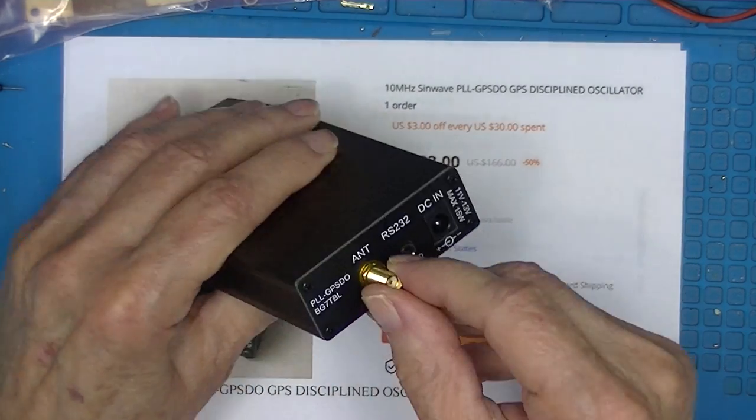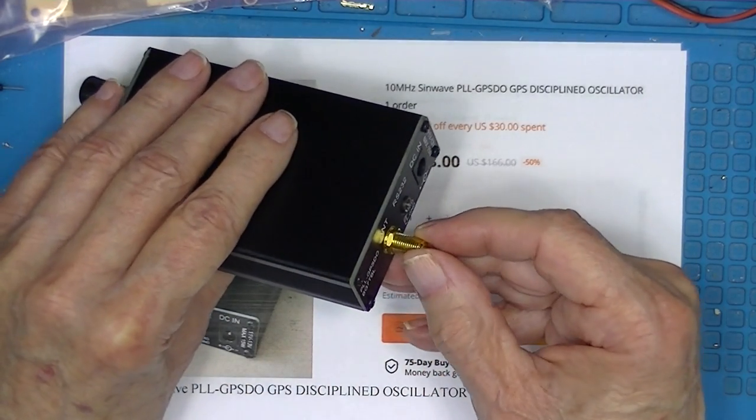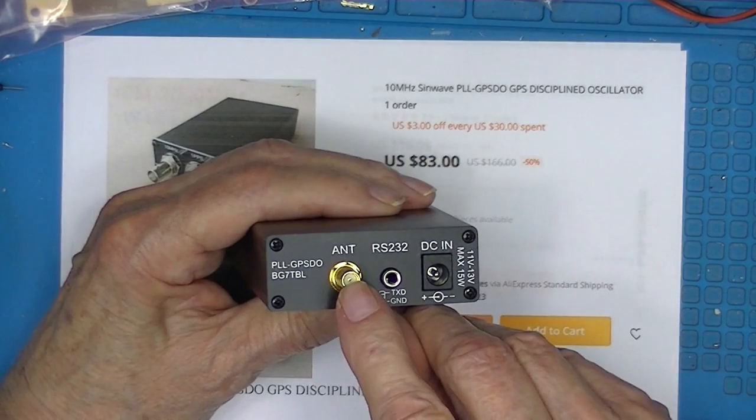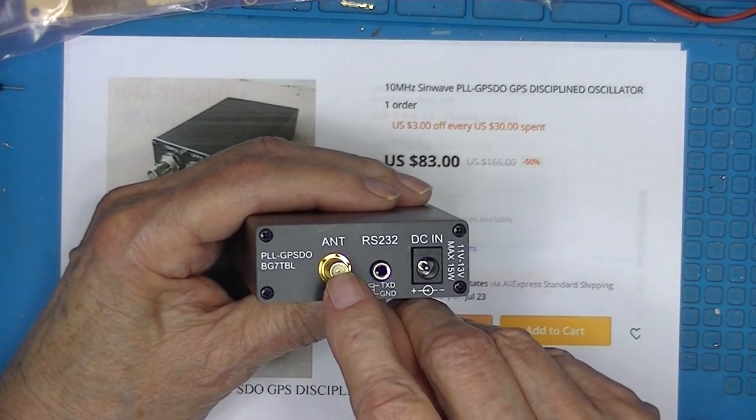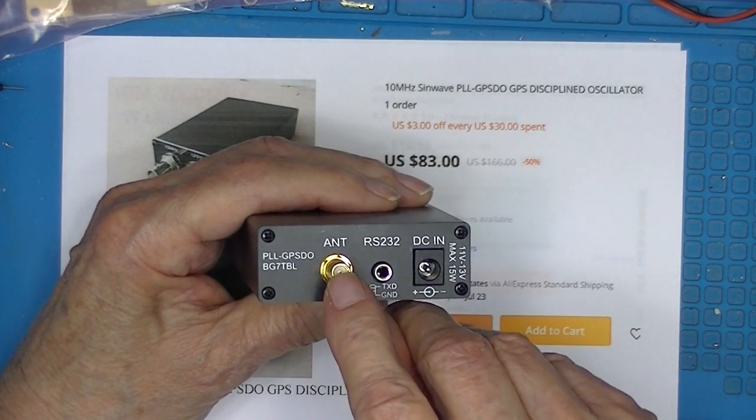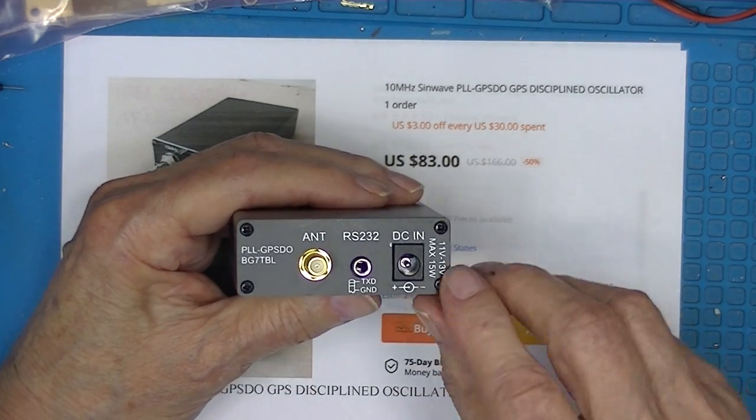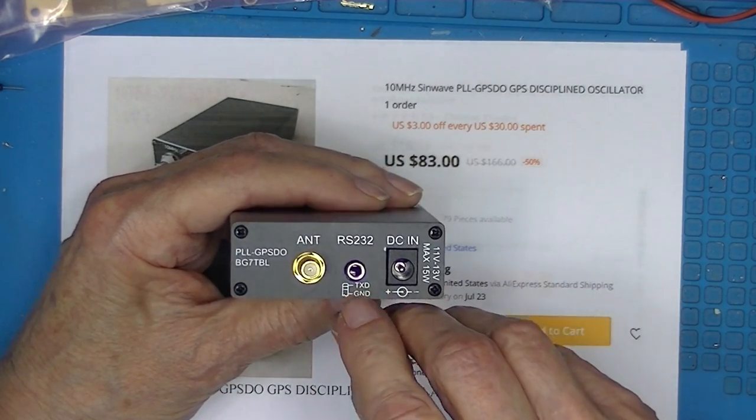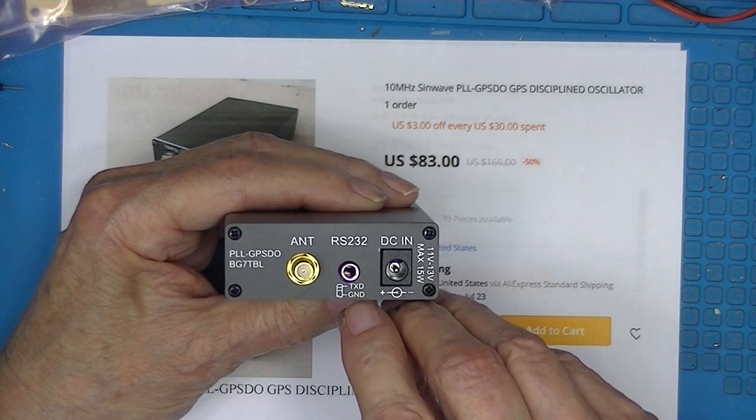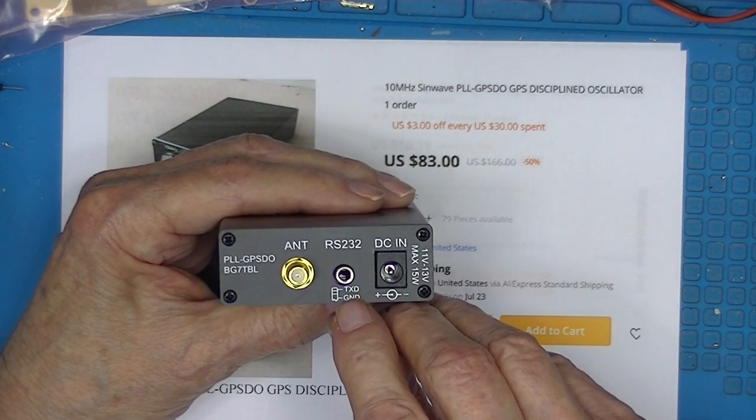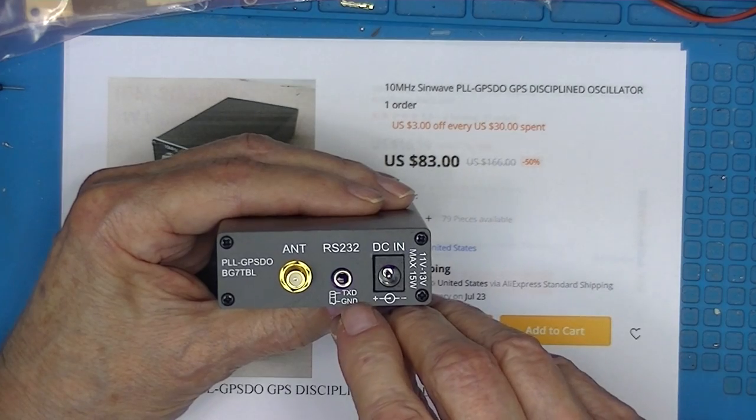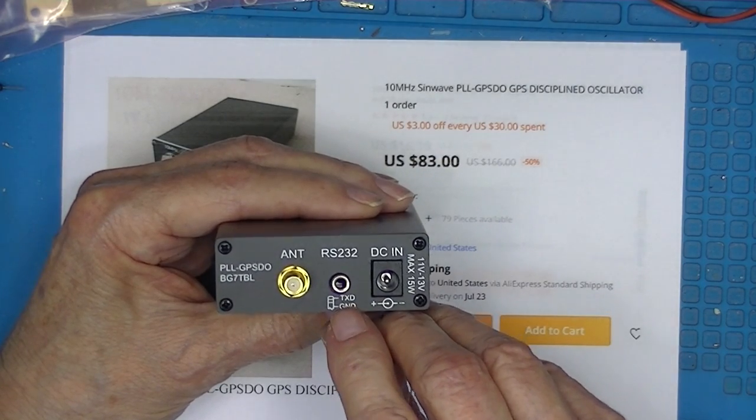This is a SMA connector for a GPS antenna and this provides 3.3 volts to the coax to power the antenna. This is a phono connector and I'm not sure if it's 3 wire or not. It almost has to be.